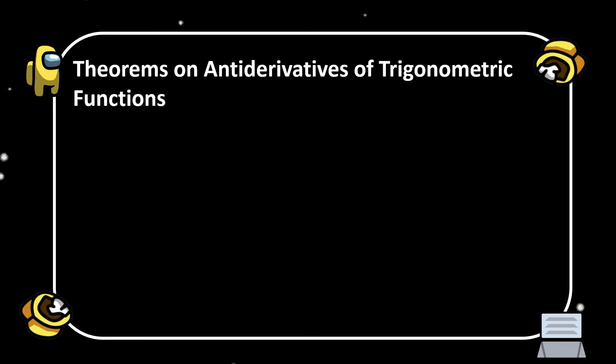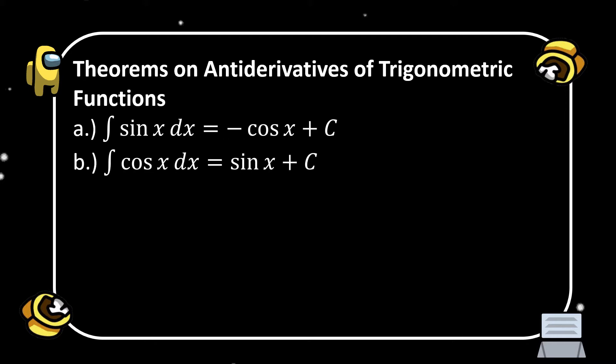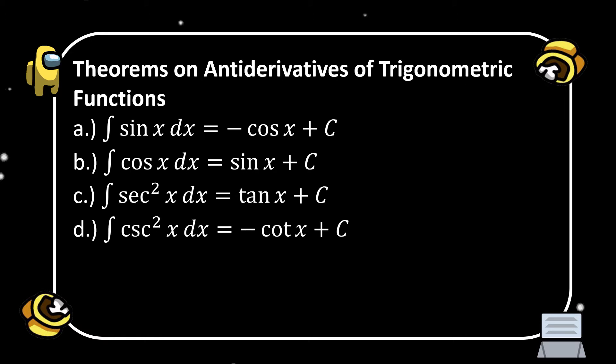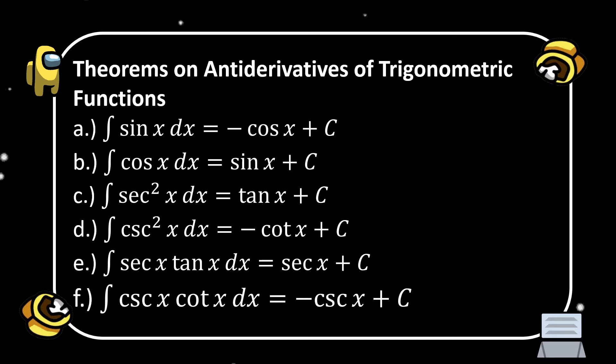Theorems on antiderivatives of trigonometric functions. First, the integral of sin x dx is equal to negative cosine x plus C. Letter b, the integral of cosine x dx is equal to sine x plus C. Letter c, the integral of secant squared x dx is equal to tangent x plus C. Letter d, the integral of csc squared x dx is equal to negative cotangent x plus C. Letter e, the integral of secant x tangent x dx is equal to secant x plus C.